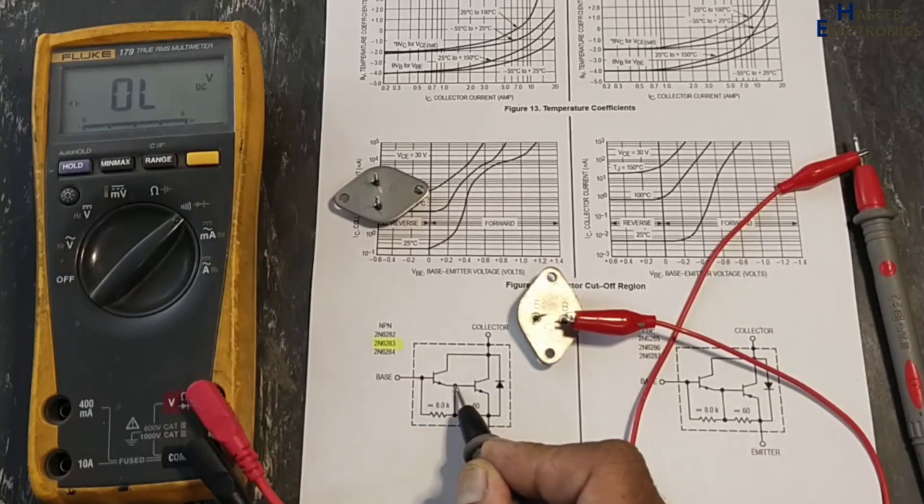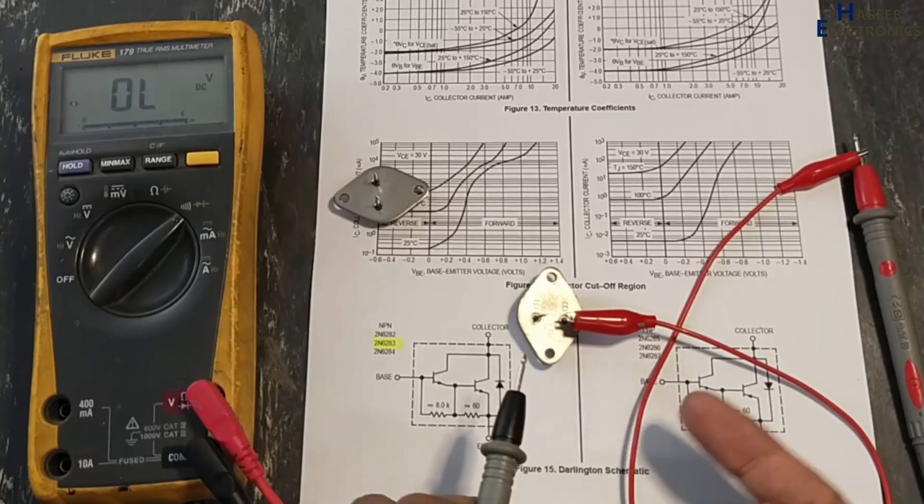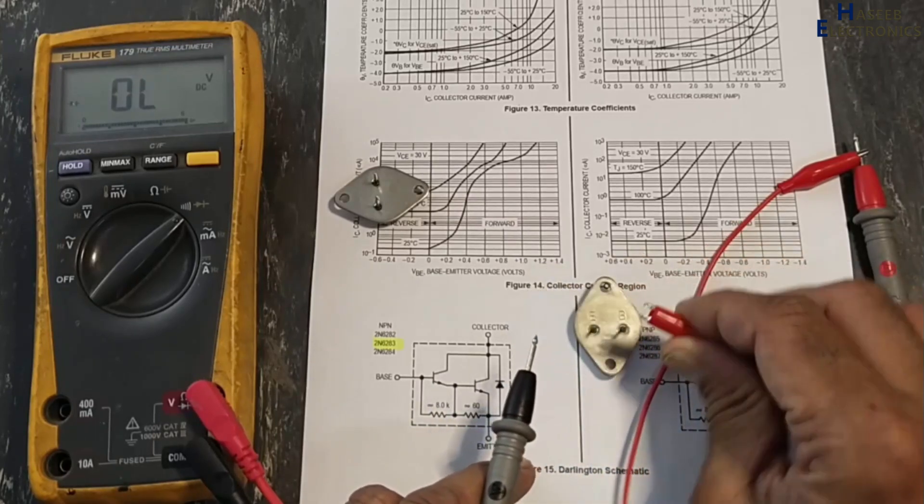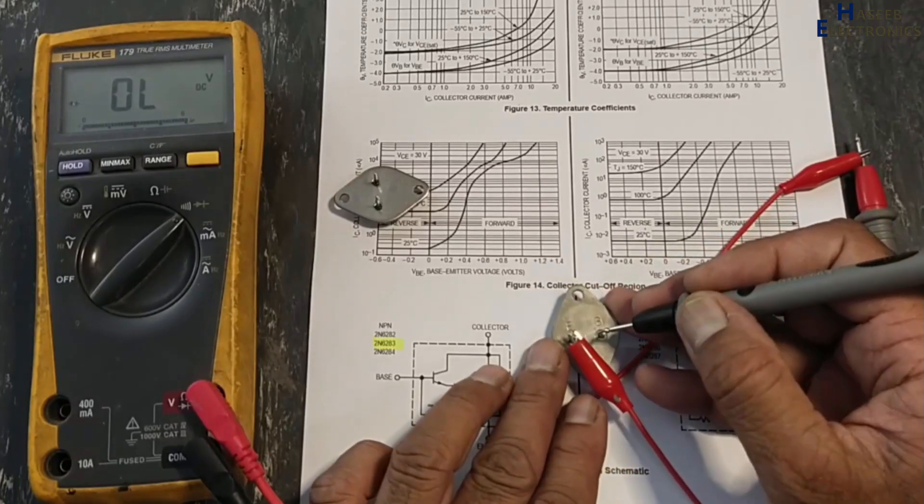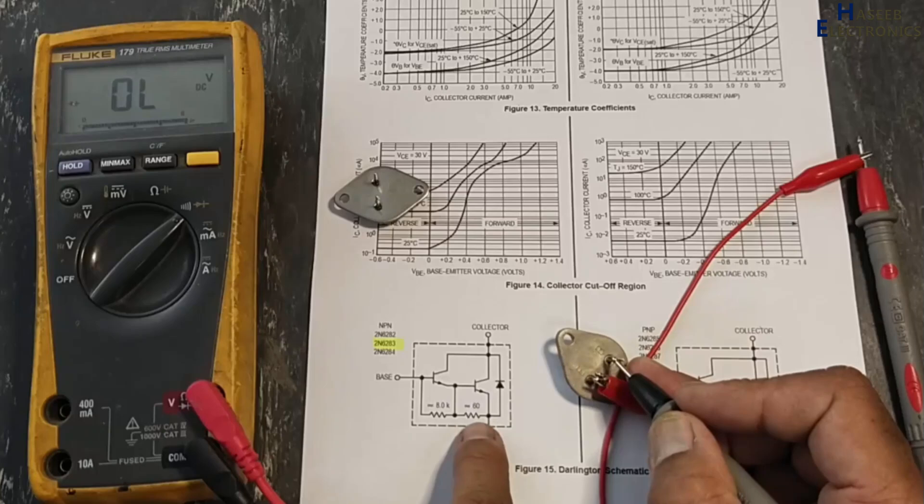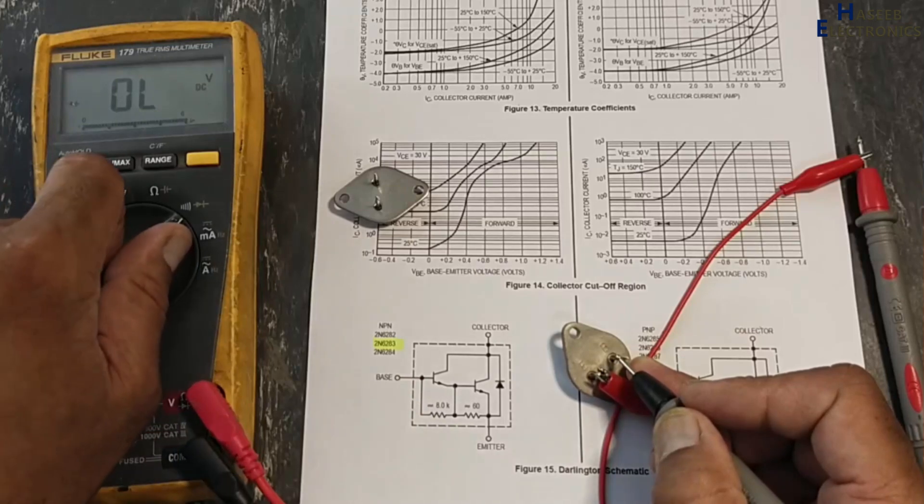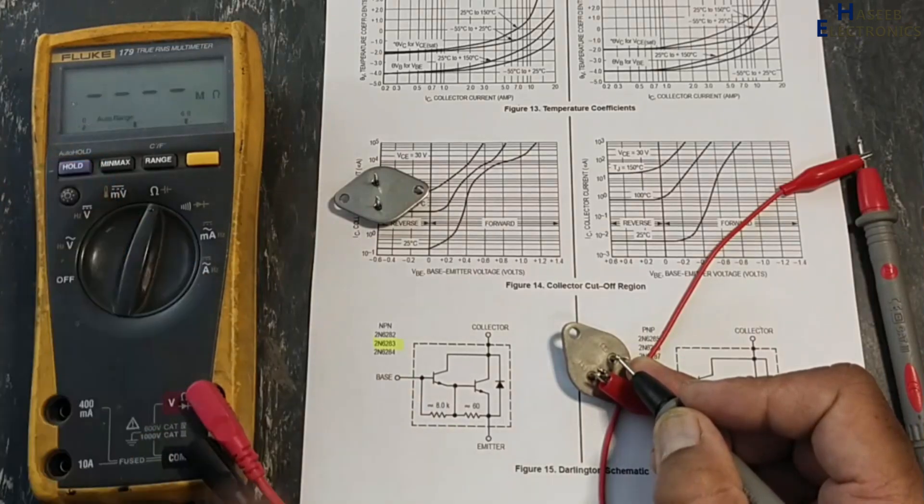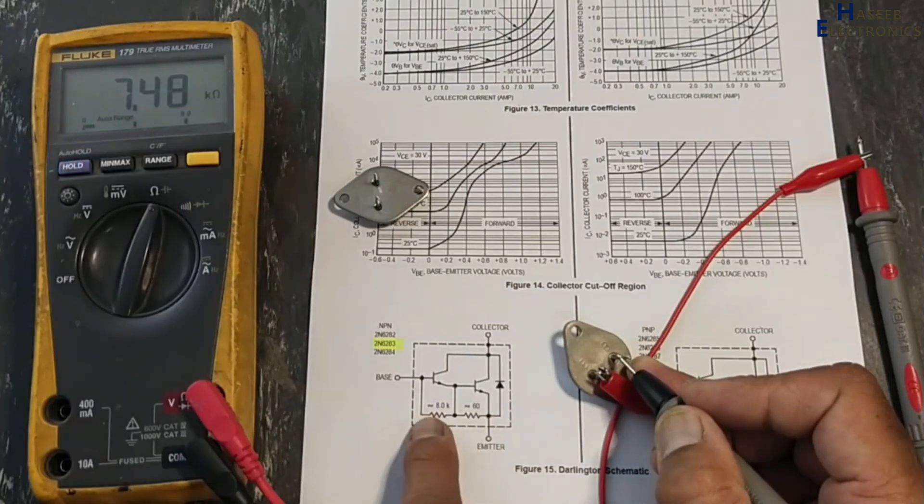Now we will reverse the leads, red lead at emitter, black lead at base. We are testing now this resistor and this resistor. We will not take reading in diode mode, so we will shift to the ohms resistance mode. 7.48K, because this time these junctions are reverse biased and we are testing now this path, two resistors in series.